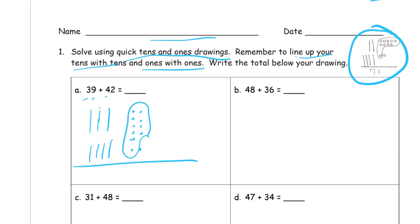So how many tens do I have? One, two, three, four, five, six, seven, eight tens, and one one left — for 81.